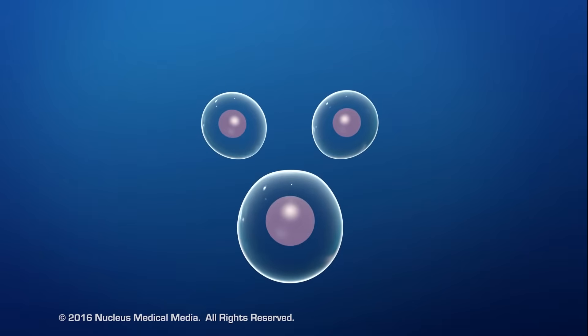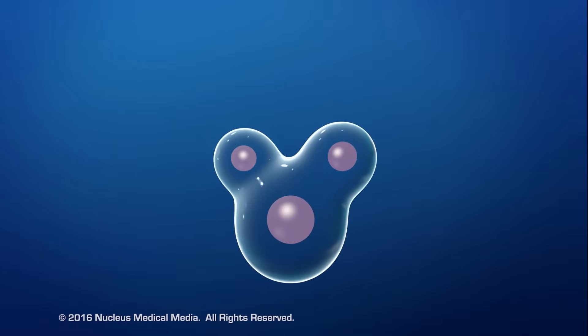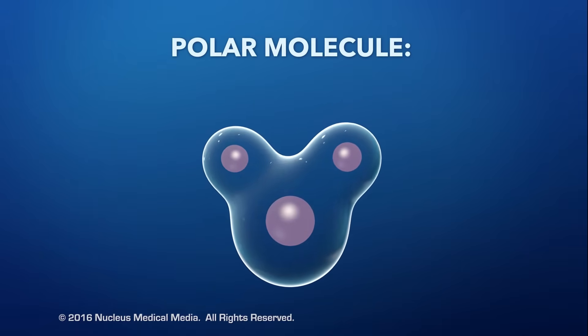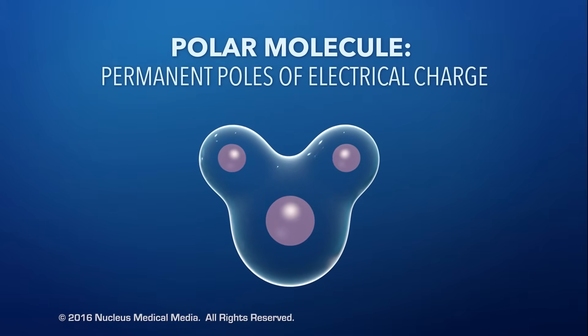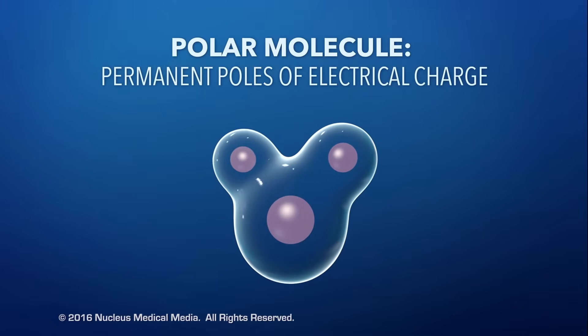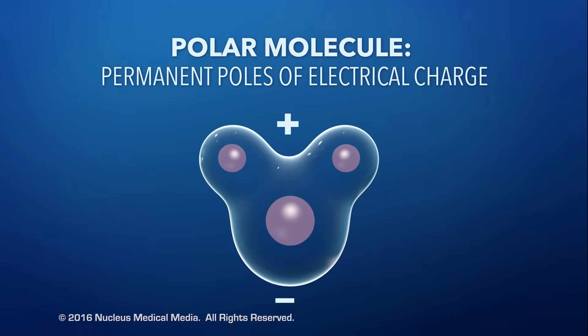In addition, some molecules are also polar. What does this mean? Well, polar molecules have permanent poles of electrical charge like a magnet because the electrons are unevenly distributed around the molecule. How does this happen?